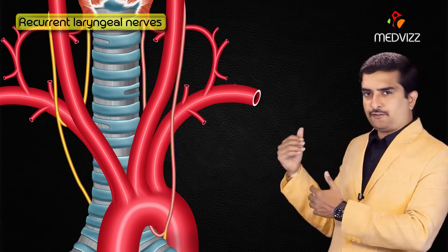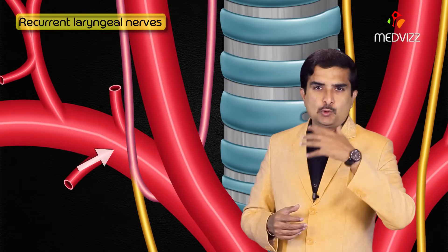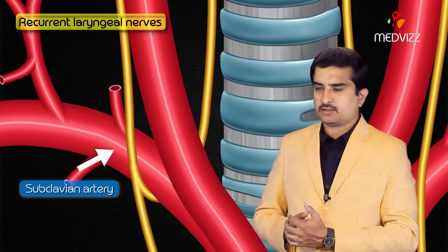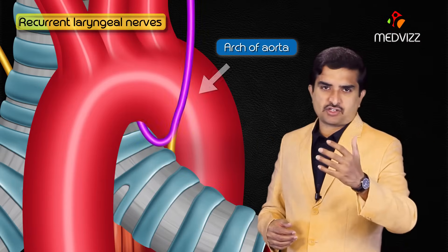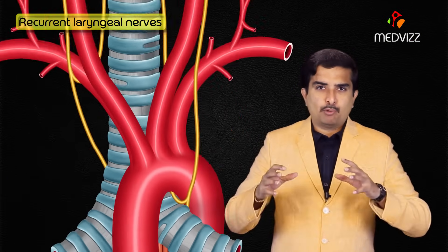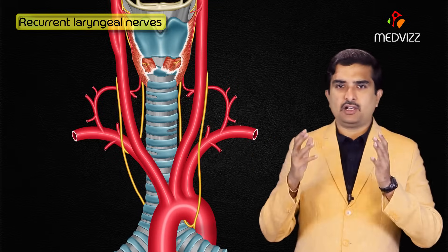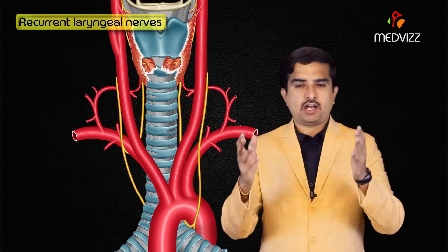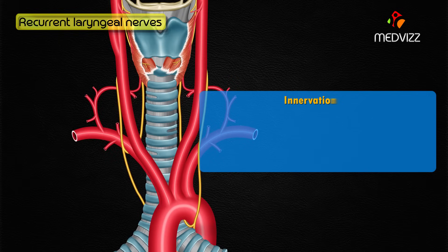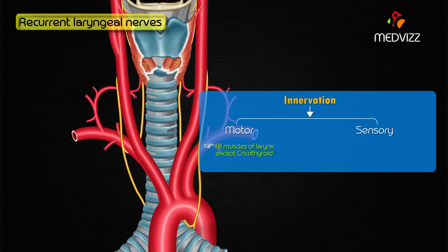The recurrent laryngeal nerves — right and left — differ in their course: the right loops under the subclavian artery and the left loops under the arch of the aorta. Both ascend posterior to the esophagus and enter the larynx at the level of the cricothyroid articulation. They provide motor innervation to all muscles of the larynx except the cricothyroids, and sensory innervation to the mucosa inferior to the vocal folds.